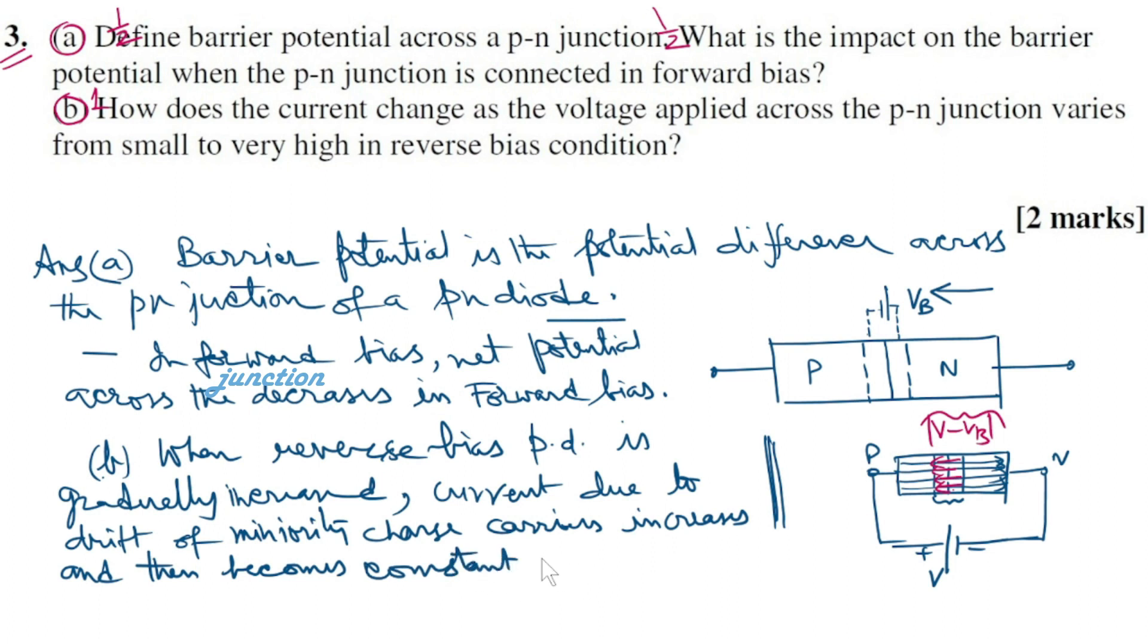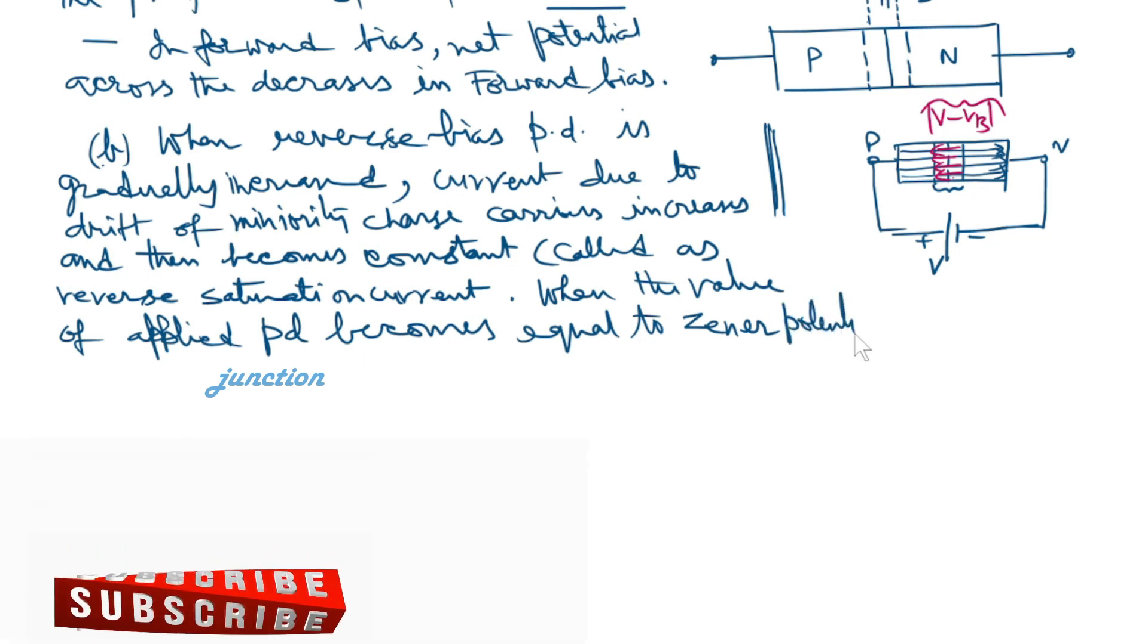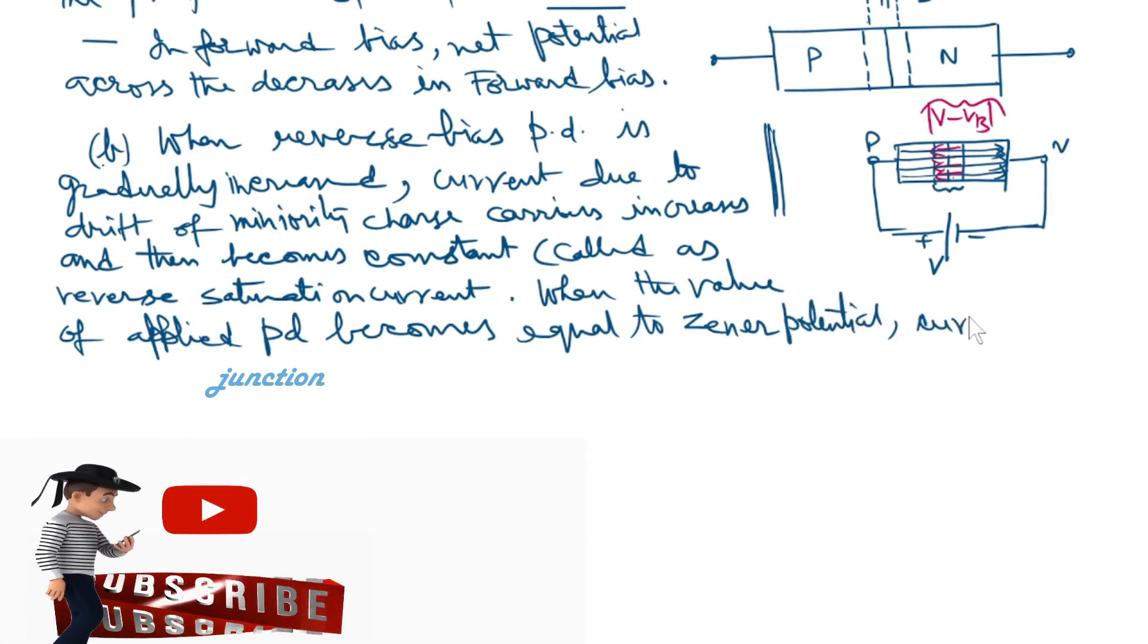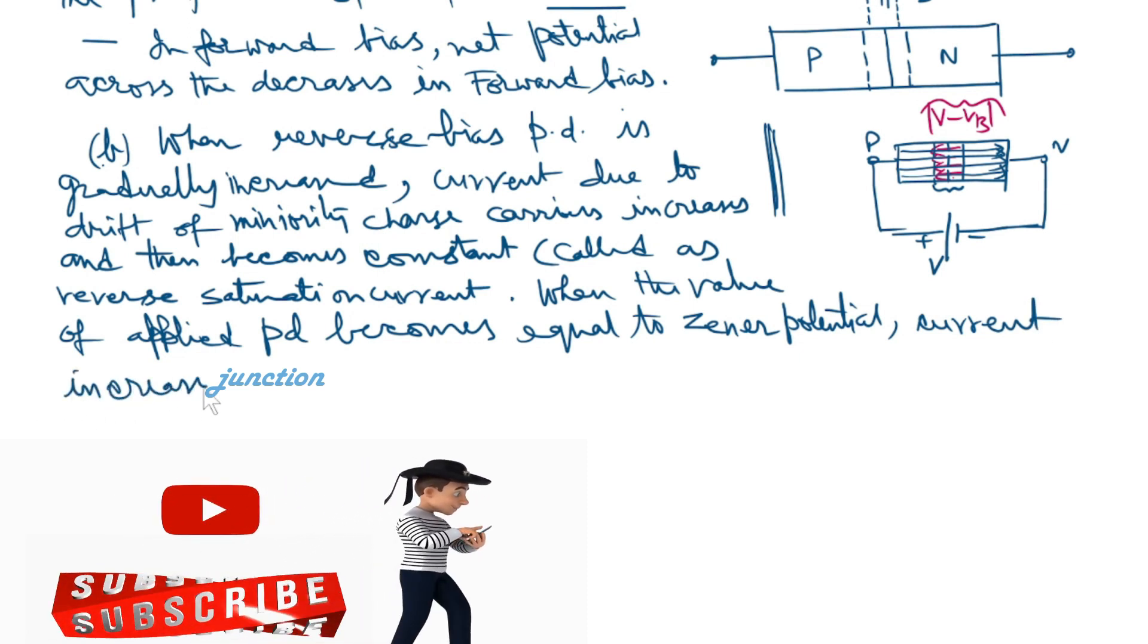This is called reverse saturation current. When the value of applied potential difference becomes equal to zener potential, current increases abruptly.